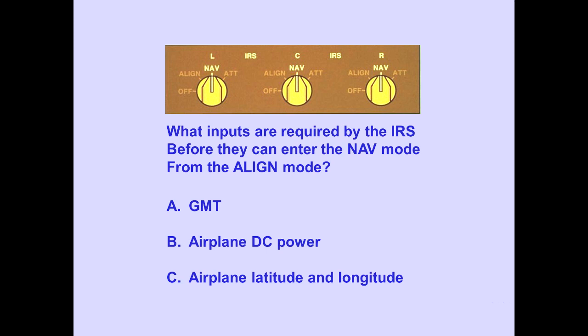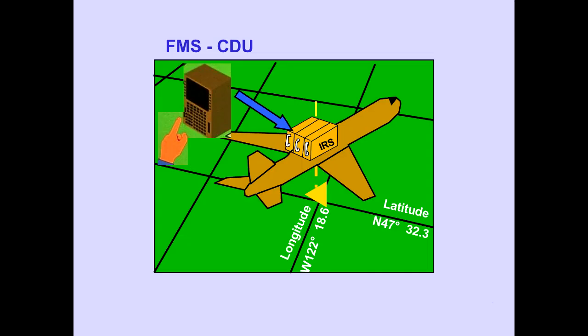Question. Answer C is correct. Present airplane latitude and longitude must be entered to complete the alignment.